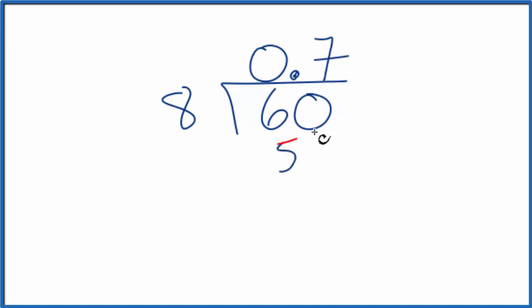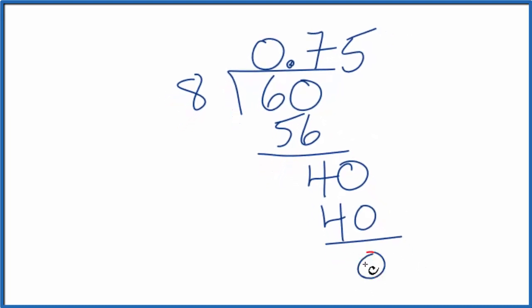7 times 8, that's 56. We subtract and get 4. We're going to move over a decimal place, call this 40. 5 times 8, that's 40. That goes into 40 there evenly. So we end up with 0.75 as the decimal for the fraction 6 eighths.